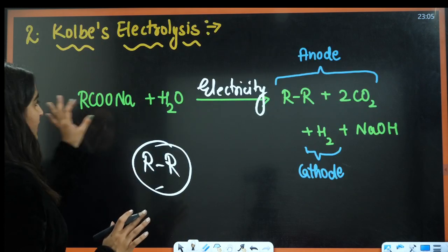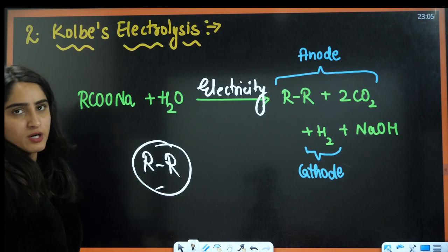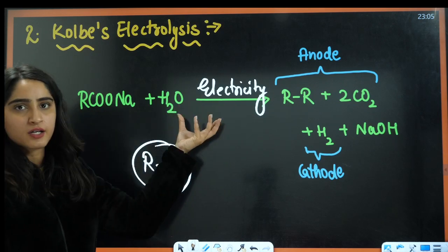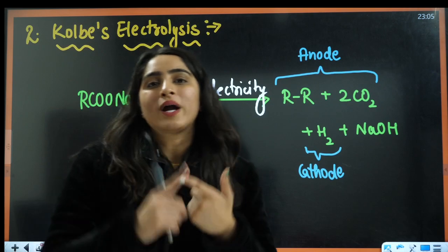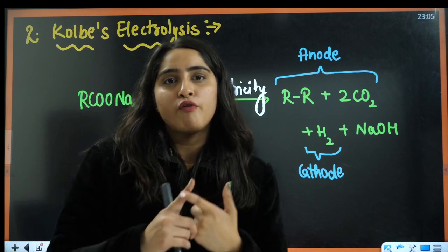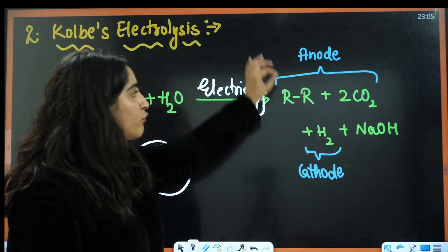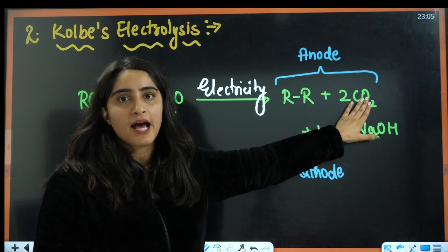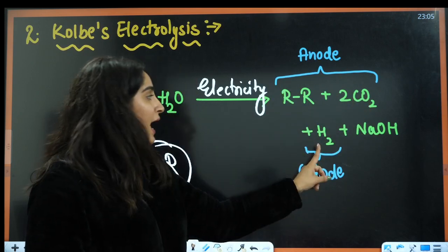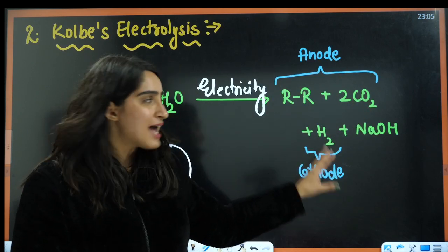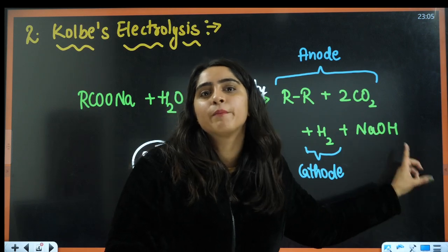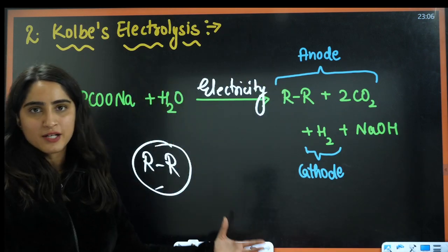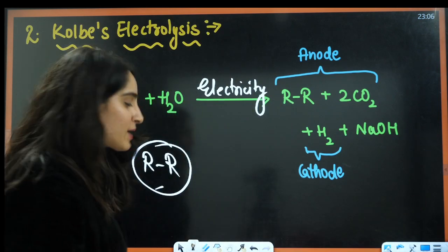In Kolbe's electrolysis, we have the sodium salt of carboxylic acid and electricity is passed through it. At the anode, we get alkane and carbon dioxide; at the cathode, we get hydrogen gas. This is a basic medium because of NaOH, and it proceeds through a free radical mechanism.